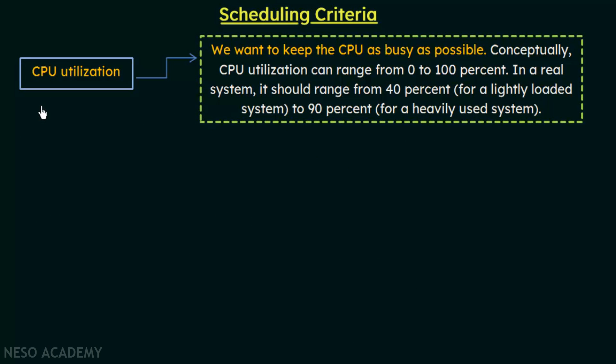The first criterion is CPU utilization. We want to keep the CPU as busy as possible. Conceptually, CPU utilization can range from 0 to 100%. In a real system, it should range from 40% for a lightly loaded system to 90% for a heavily used system. When the CPU is busy, some process is being executed, meaning the CPU is doing work — the more processes are being executed, the more work is done.